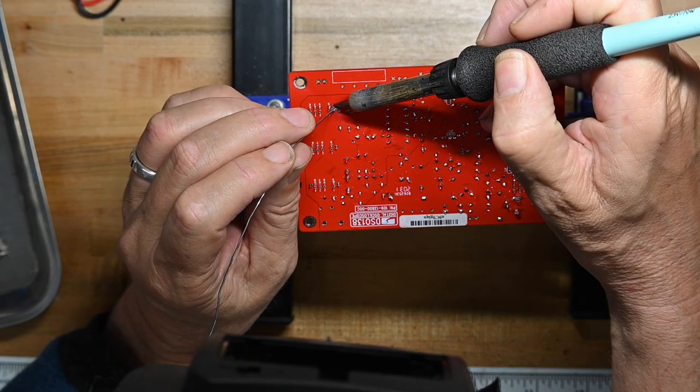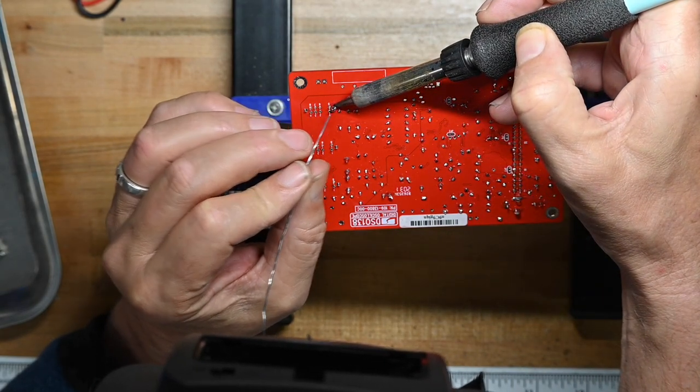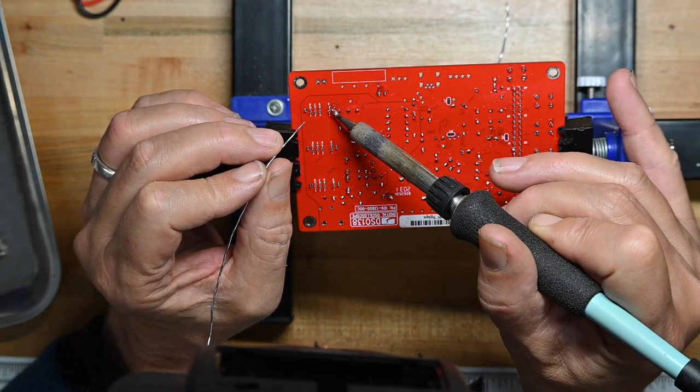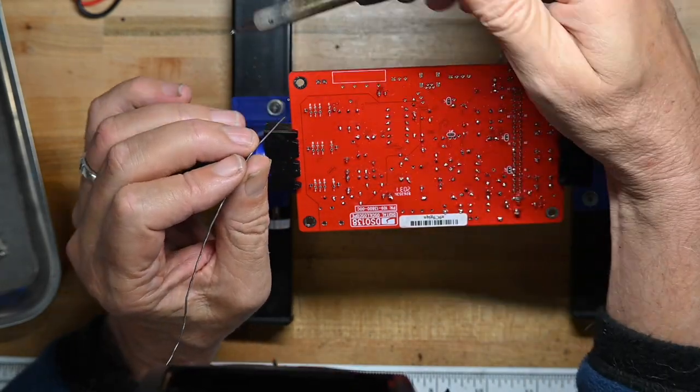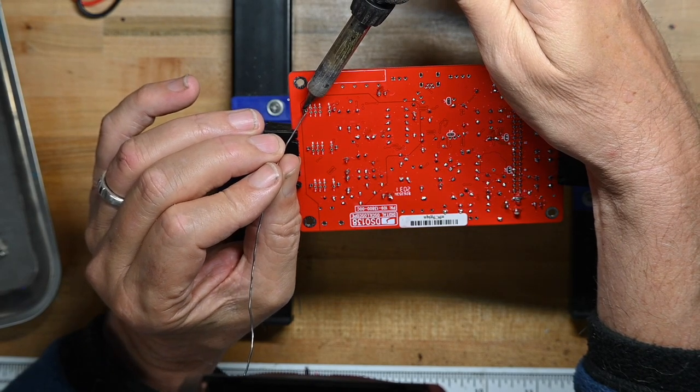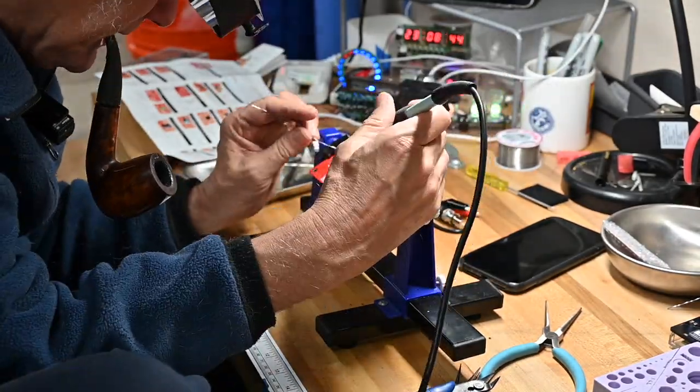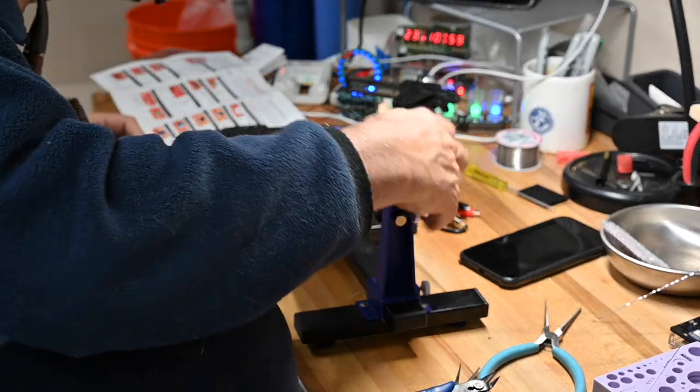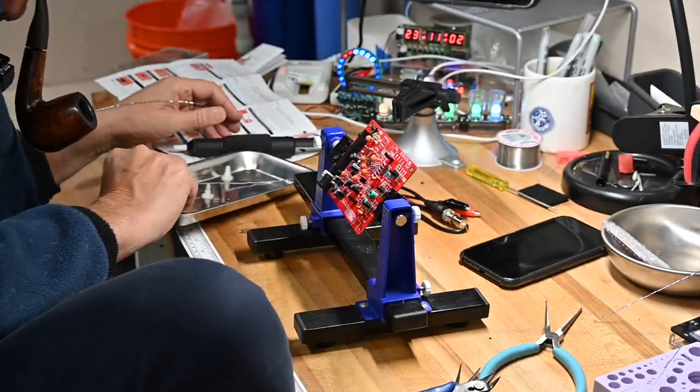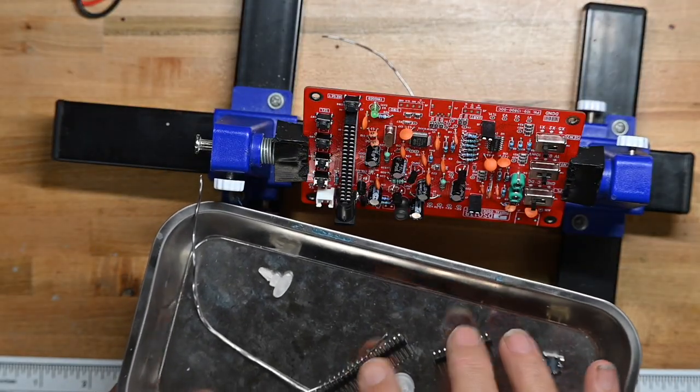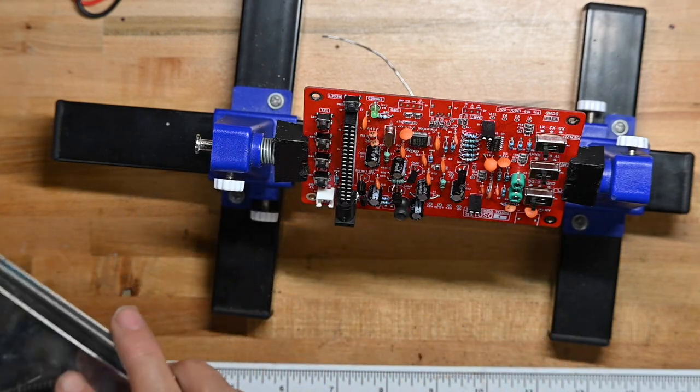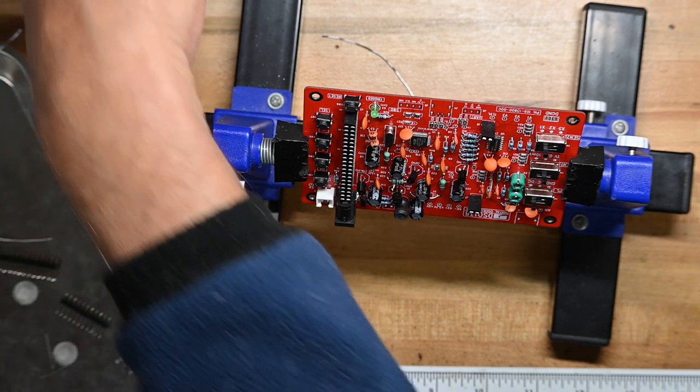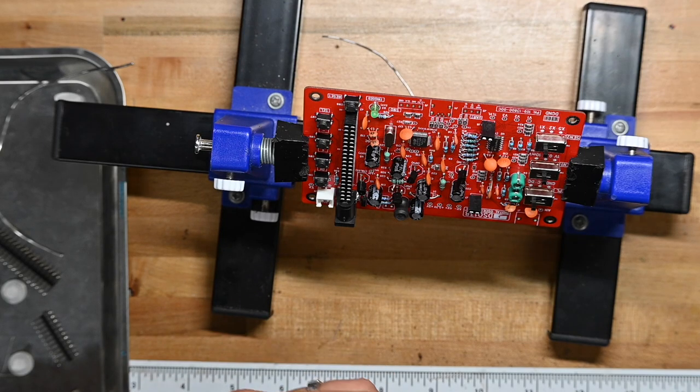These end pins on the switches, again, another place where you want to glob the solder on, because they're where the mechanical force of you moving the switch back and forth will be primarily absorbed. So the only thing we've got is we've got pin headers for the LCD display, and the USB connector that we are not going to be using. Oh, and I'm sorry, one of the most important parts, the BNC connector. I gotta do that.